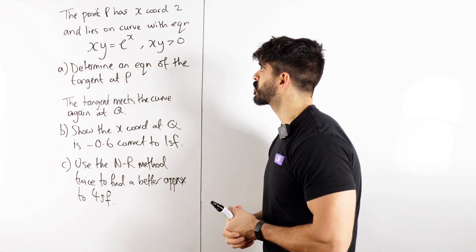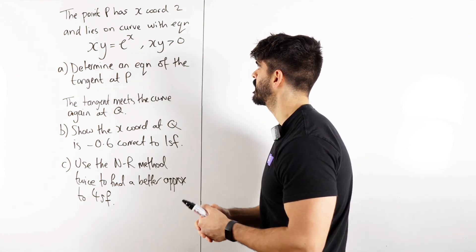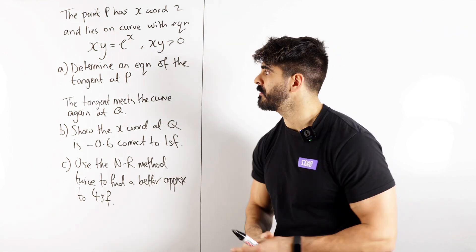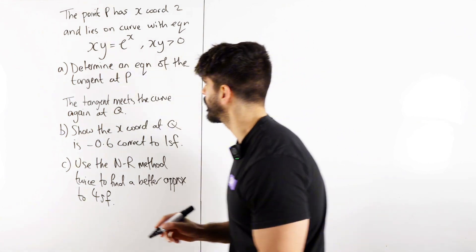It says the point P has x coordinate 2 and lies on this curve with equation xy equals e to the x, xy is positive. Determine an equation for the tangent at P. Forget about all the yap going on down there for now, let's just focus on finding the tangent.